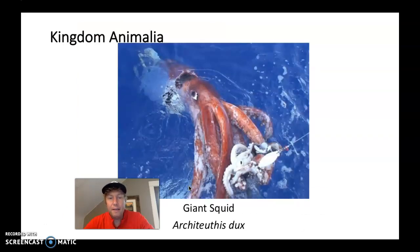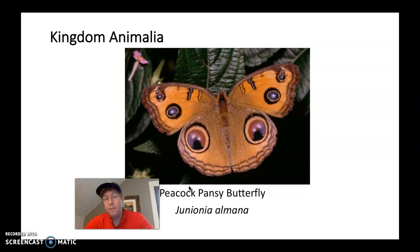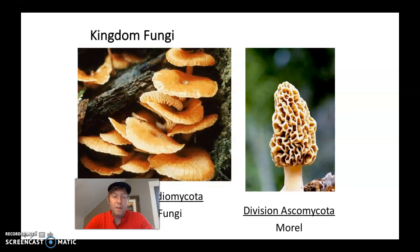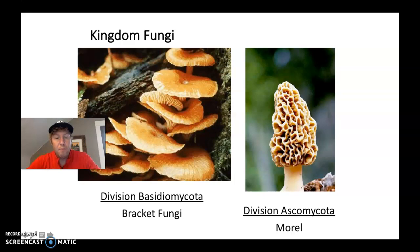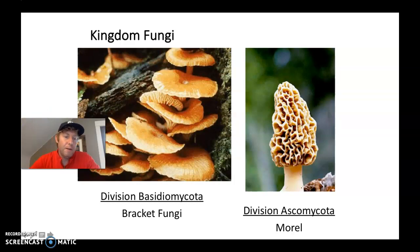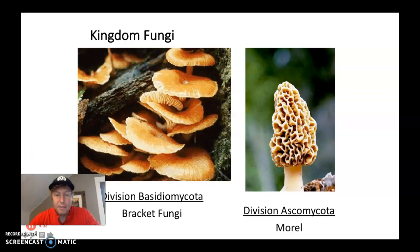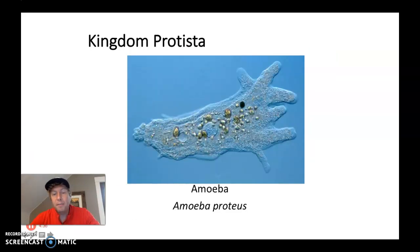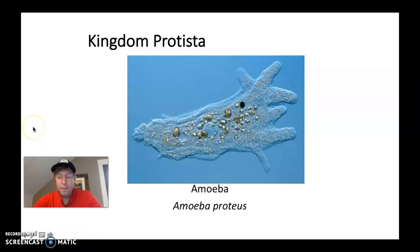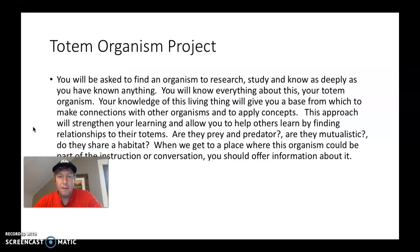Also in the kingdom animalia: giant squid, and a peacock pansy butterfly — when we think animals, we're also talking about insects. In the kingdom fungi, we have basidiomycota, bracket fungi you may have seen in nature, or the morel mushroom, which in springtime in Minnesota you can pick and eat — though never eat a mushroom unless you know a lot about it, because they can make you very sick or even kill you. Kingdom Protista — this is a picture of an amoeba. These live in aquatic environments like Como Lake; many protists photosynthesize using the sun's energy, but they can also move around and hunt food.